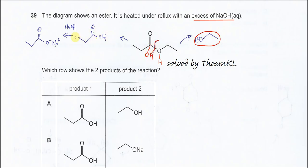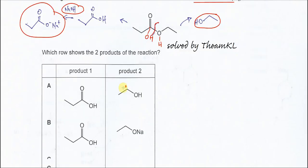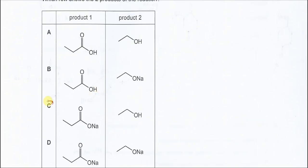This is propanoic acid, and this carboxylic acid will further react with the sodium hydroxide to form this salt, sodium propanoate. So this is one of the products and this is another product, therefore answer is C.